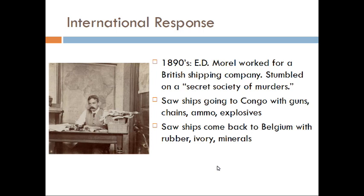In the 1890s, E.D. Morell worked for a British shipping company and stumbled on what he described as a secret society of murders — which was basically the entire culture within the Congo Free State established by the Belgians. He saw ships going to the Congo with guns, chains, ammunition, and explosives, then coming back to Belgium with rubber, ivory, and minerals. There was obviously extreme oppression happening, and the word about how vast it had been was just beginning to leak out. Morell alerted other people to this and started writing about it.